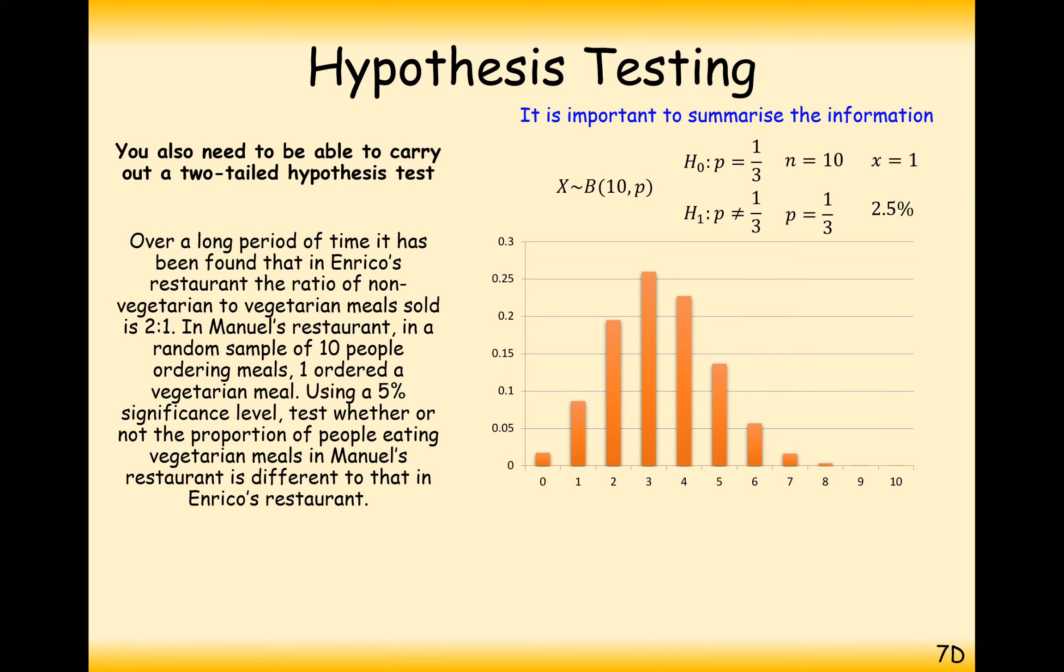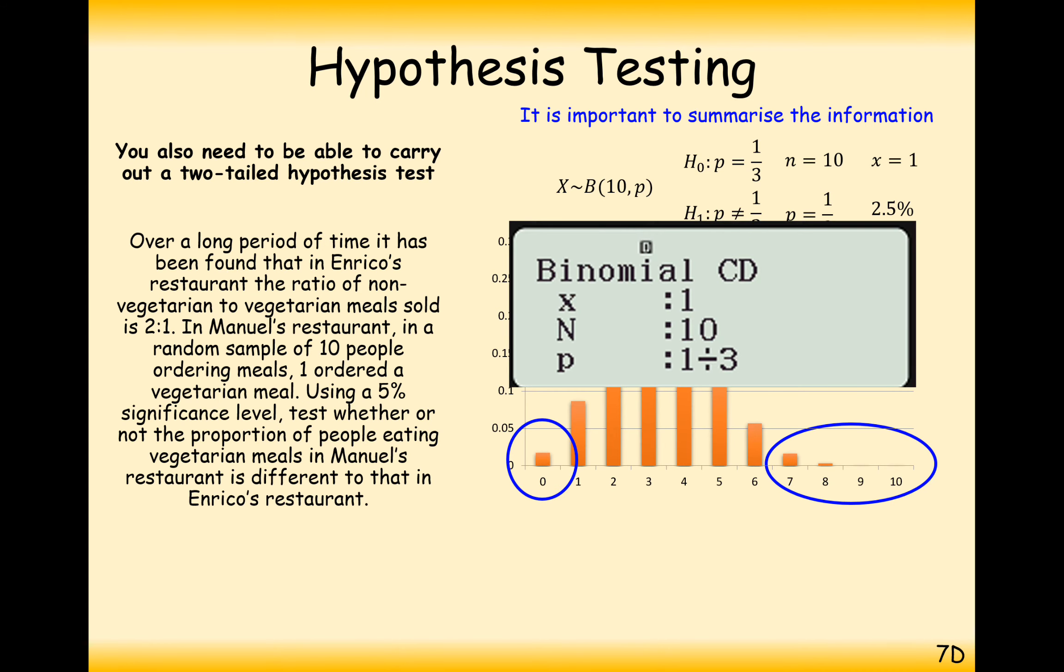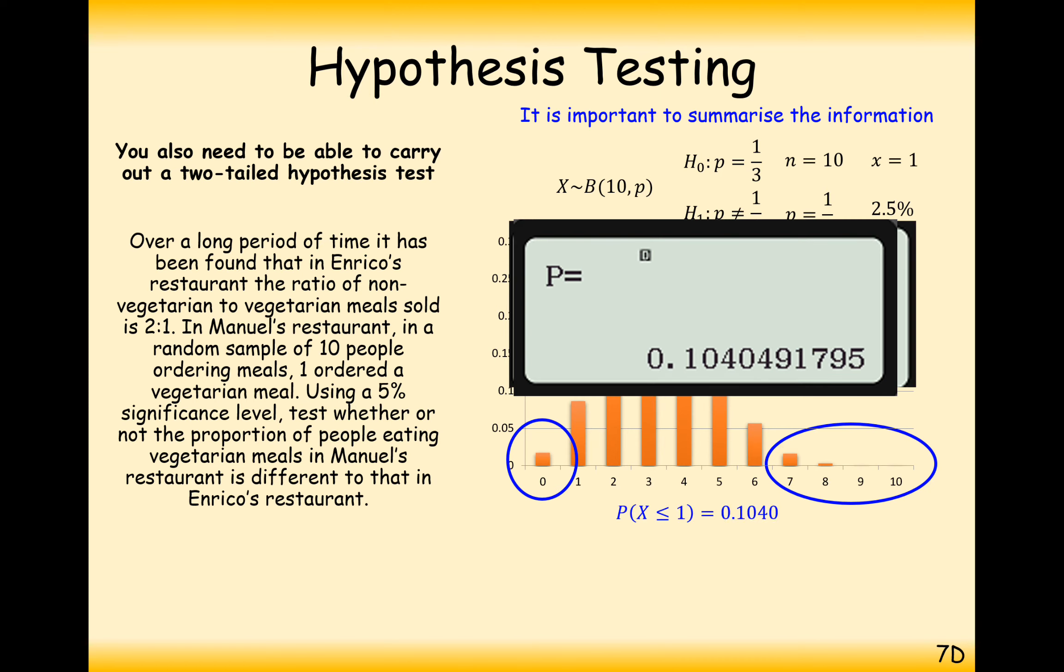Okay. So, in this case here, we're going to test at either of the extremes, so at 2.5% significance level. So, we're going to test to see if the left-hand tail, where the X equals 1 variable, that's the number of successes, is less than 2.5%. So, what you do, plug it into your calculator, one success, cumulative binomial probability out of 10, probability of a third. Don't type in 0.3 because that's wrong, type in 1 divided by 3, and that will give you exactly a third. And you'll get 10%. 10% is way bigger than 2.5%. So, as this is values more than 2.5%, there is no reason to reject the null hypothesis. So, Manuel's restaurant could be identical to Enrico's restaurant in terms of the number of vegetarian meals sold.